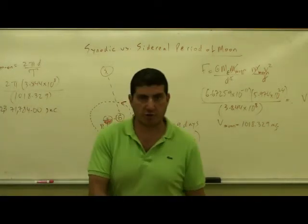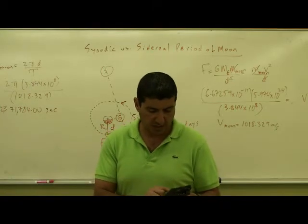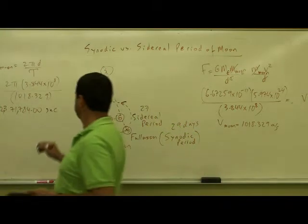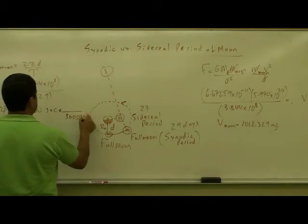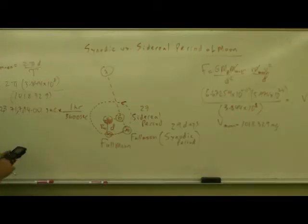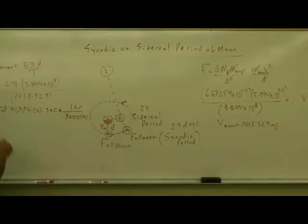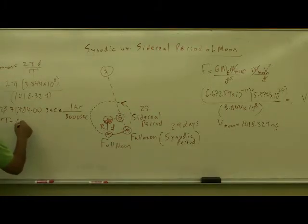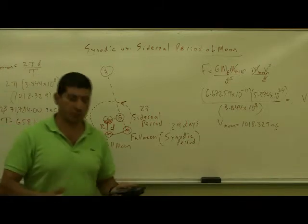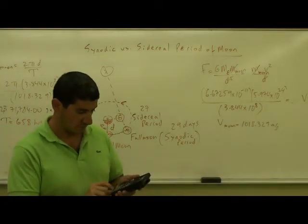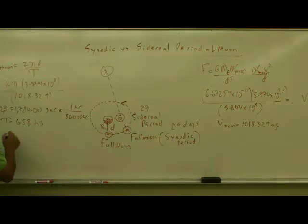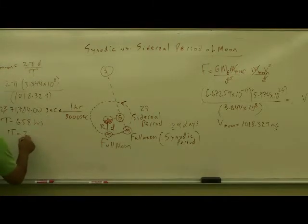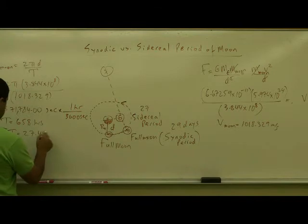3,600 seconds is one hour, so you can divide this by 3,600 seconds. You get 658 hours. And then, of course, 24 hours is one day.